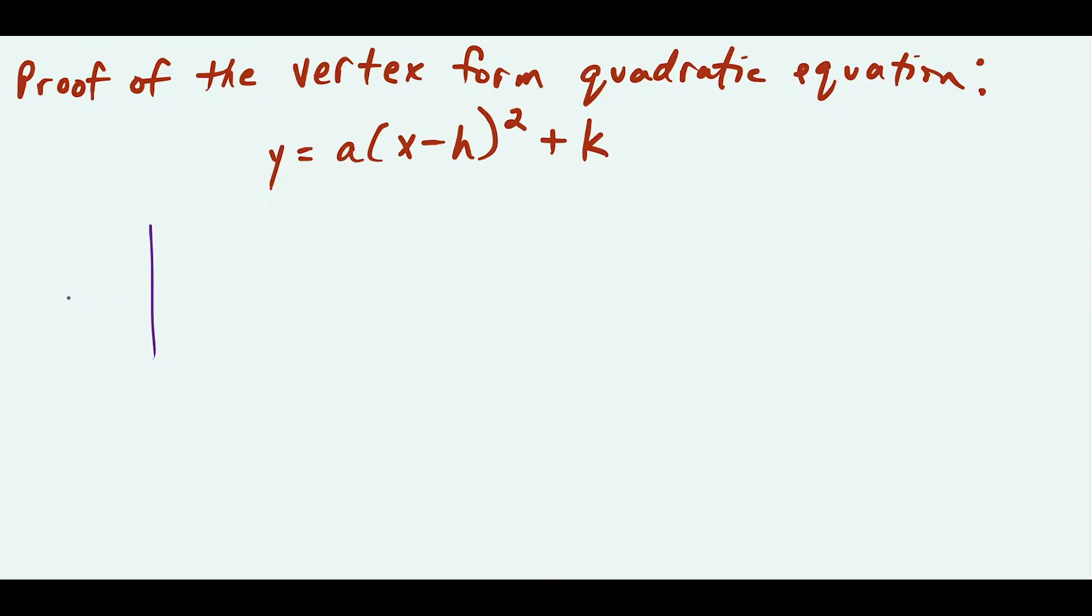A little background on this. If I look at a graph of some parabola, I'll sketch one out right here. Looking at the vertex, we usually indicate it with the point (h, k), and then any other point on the curve we call (x, y).